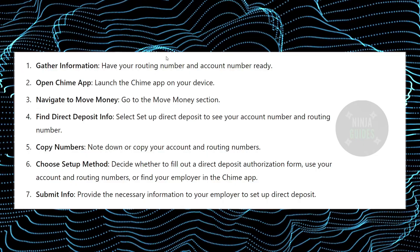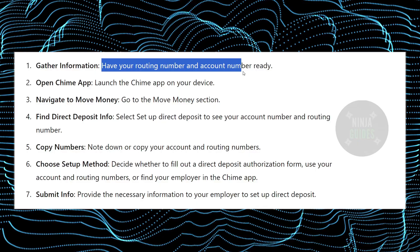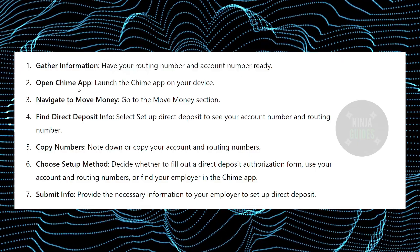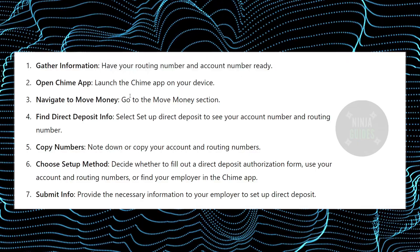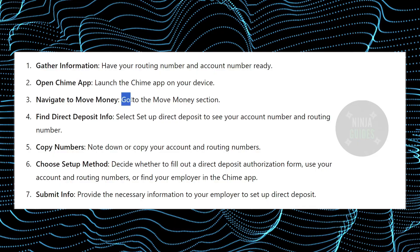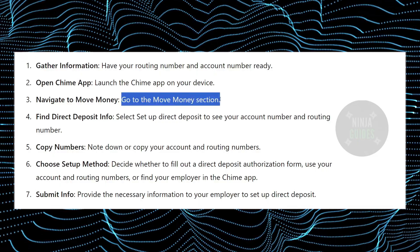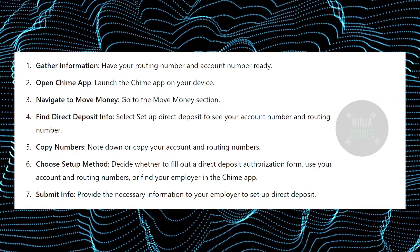First things first, gather your information — have your routing number and account number ready. Then open up the Chime app on your device, and after that simply go to the Move Money section.